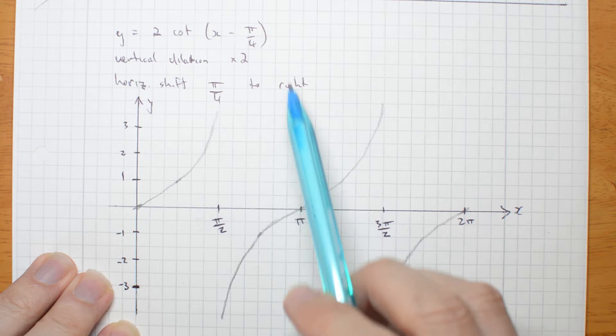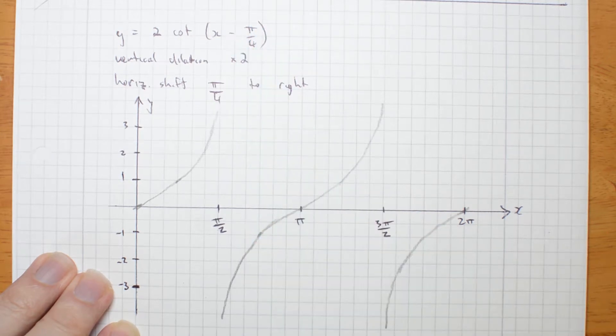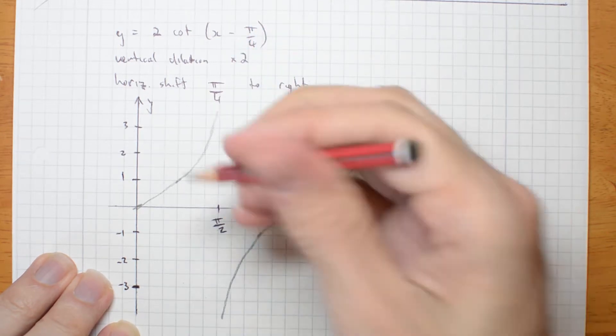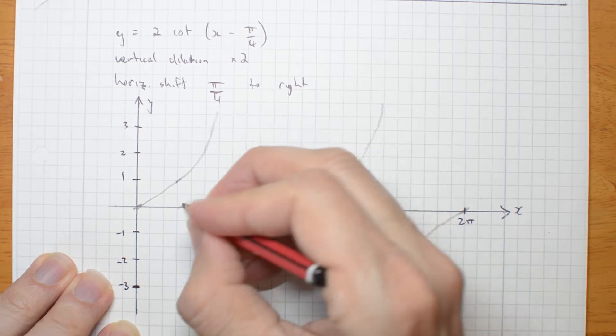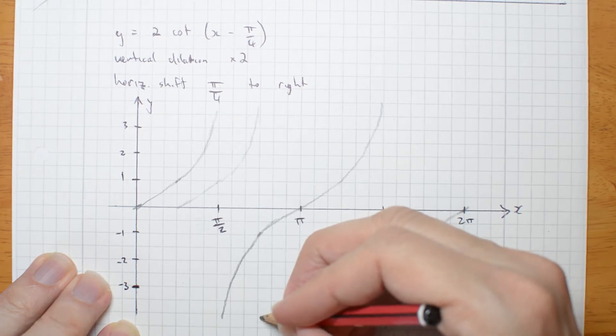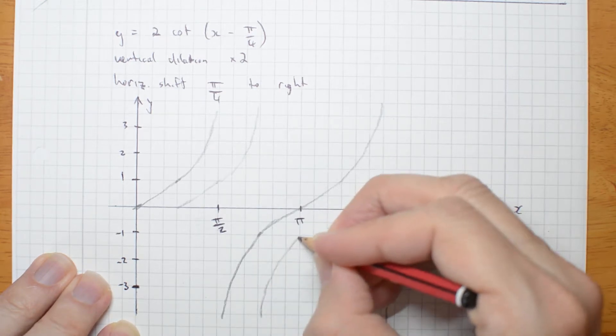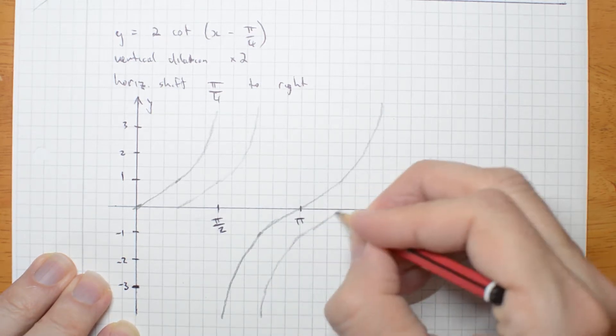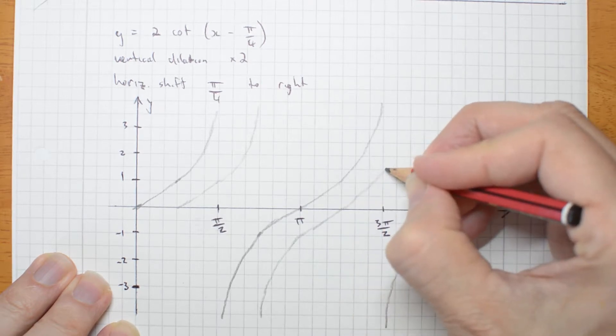I'm shifting it to the right by pi on 4. So that means I'm actually coming up here. Going here. Up to an asymptote there. Here. Value 1. Through 0. And going up.